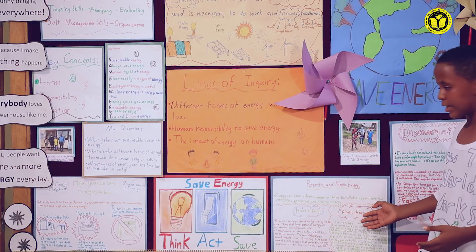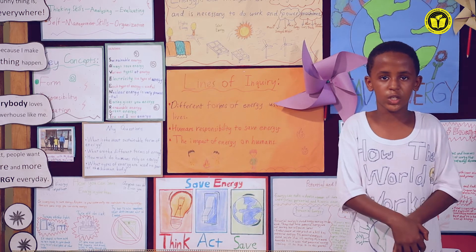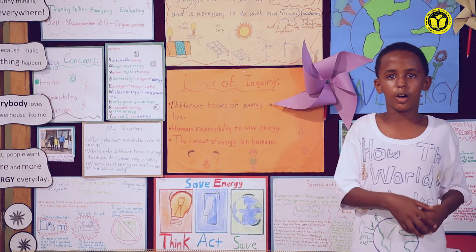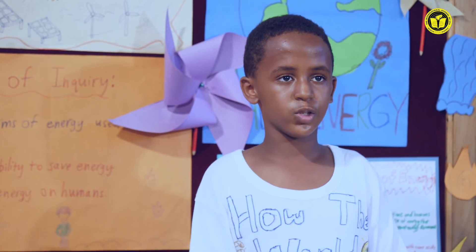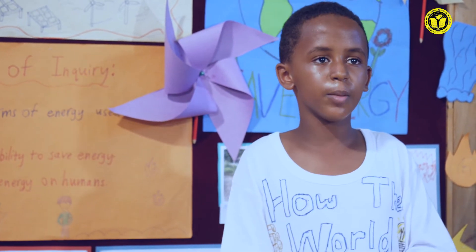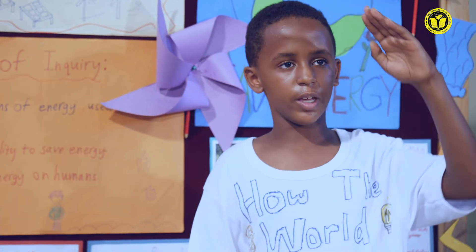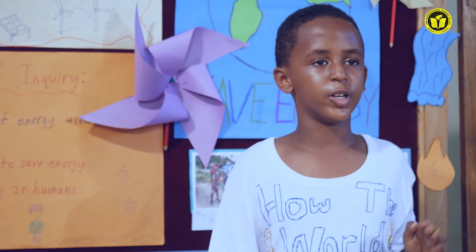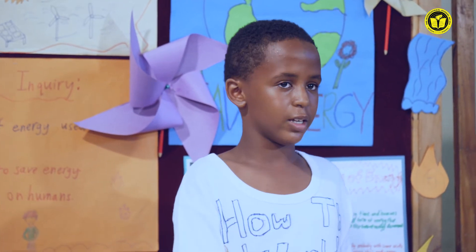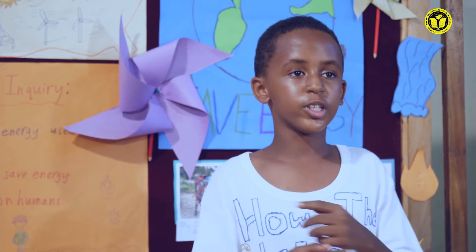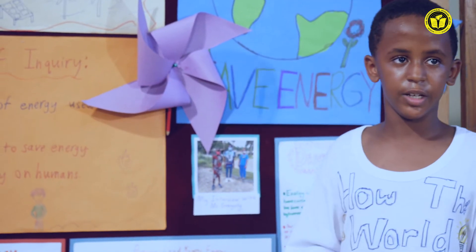Then there is kinetic energy. Kinetic energy is energy of motion. The more mass an object has, the more kinetic energy it is storing. For example, let's use the roller coaster again. As it moves down the hill, we know that it loses potential energy. But we know energy can't be created or destroyed, so that potential energy turns into kinetic energy.